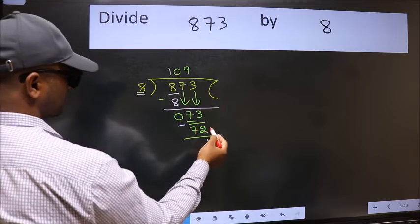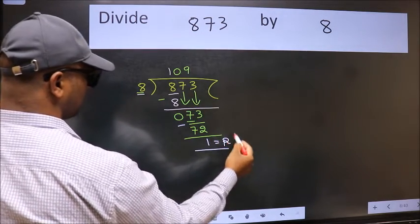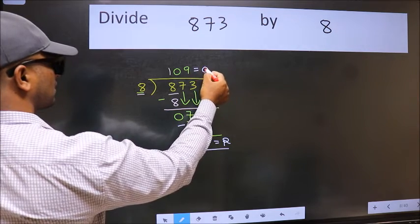No more numbers to bring it down. So we stop here. This is our remainder and this is our quotient.